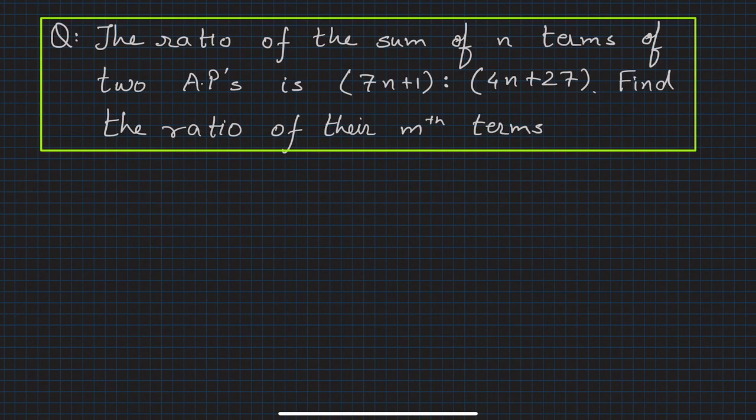Here is another very interesting question. The ratio of the sum of n terms of two APs is (7n+1) to (4n+27). You have to find the ratio of their mth terms.